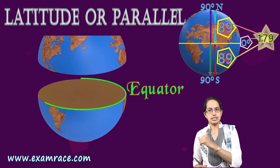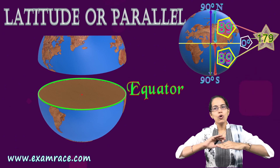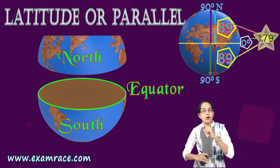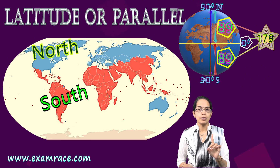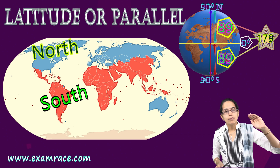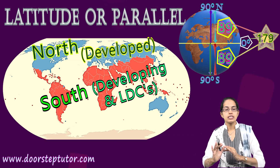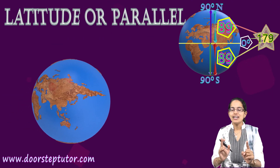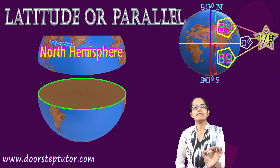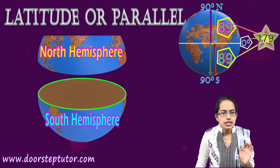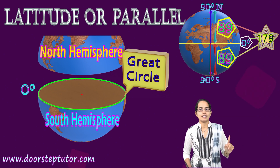The equator is the greatest circle in the case of latitudes because it is the only circle that divides the globe into the northern and southern hemispheres. Note that the north-south divide when referring to countries is based on economic development — developed versus developing nations — which is entirely different from the geographical north and south hemispheres we are discussing here.